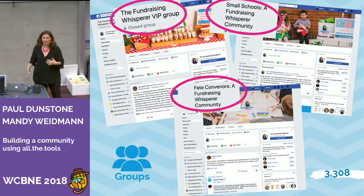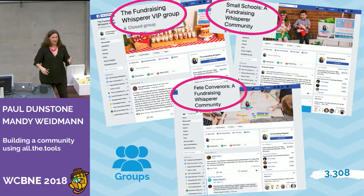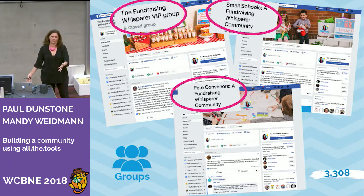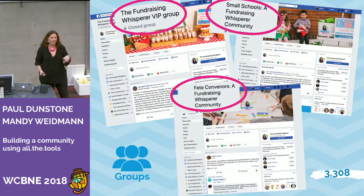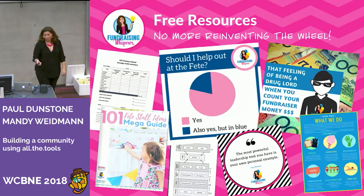Our closed groups are actually now where all of our content creation comes from, because these guys are all chatting to each other. We've got a fete organisers group — they're all asking questions, and then all these people come straight on and answer them. There's an article for us: how do I run my hot chip stand? 25 responses. And then we just curate that into an article. Someone types into Google, how do I run my hot chip stand? Ta-da, there we are. It's a fantastic group for them as well as for us.